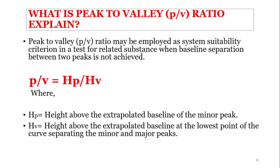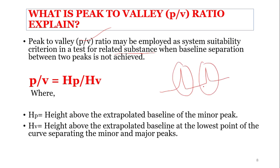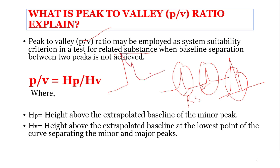What is peak-to-valley ratio? Peak-to-valley ratio may be employed as an SST criterion in a test for related substances where baseline separation between two peaks is not achieved. When peaks are well separated, resolution can be calculated. But when two peaks overlap and separation is not achieved, the peak-to-valley (p/v) ratio is used instead.